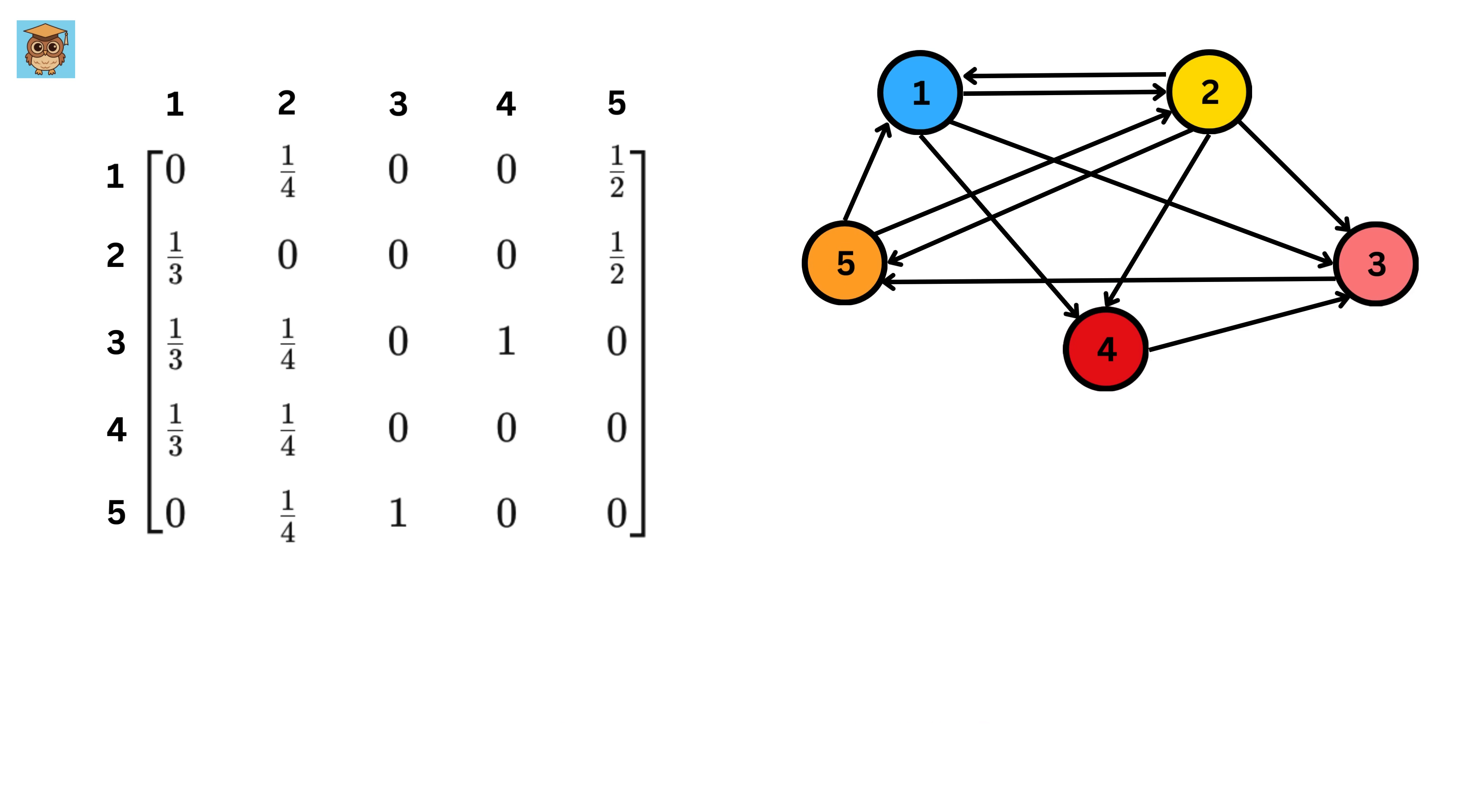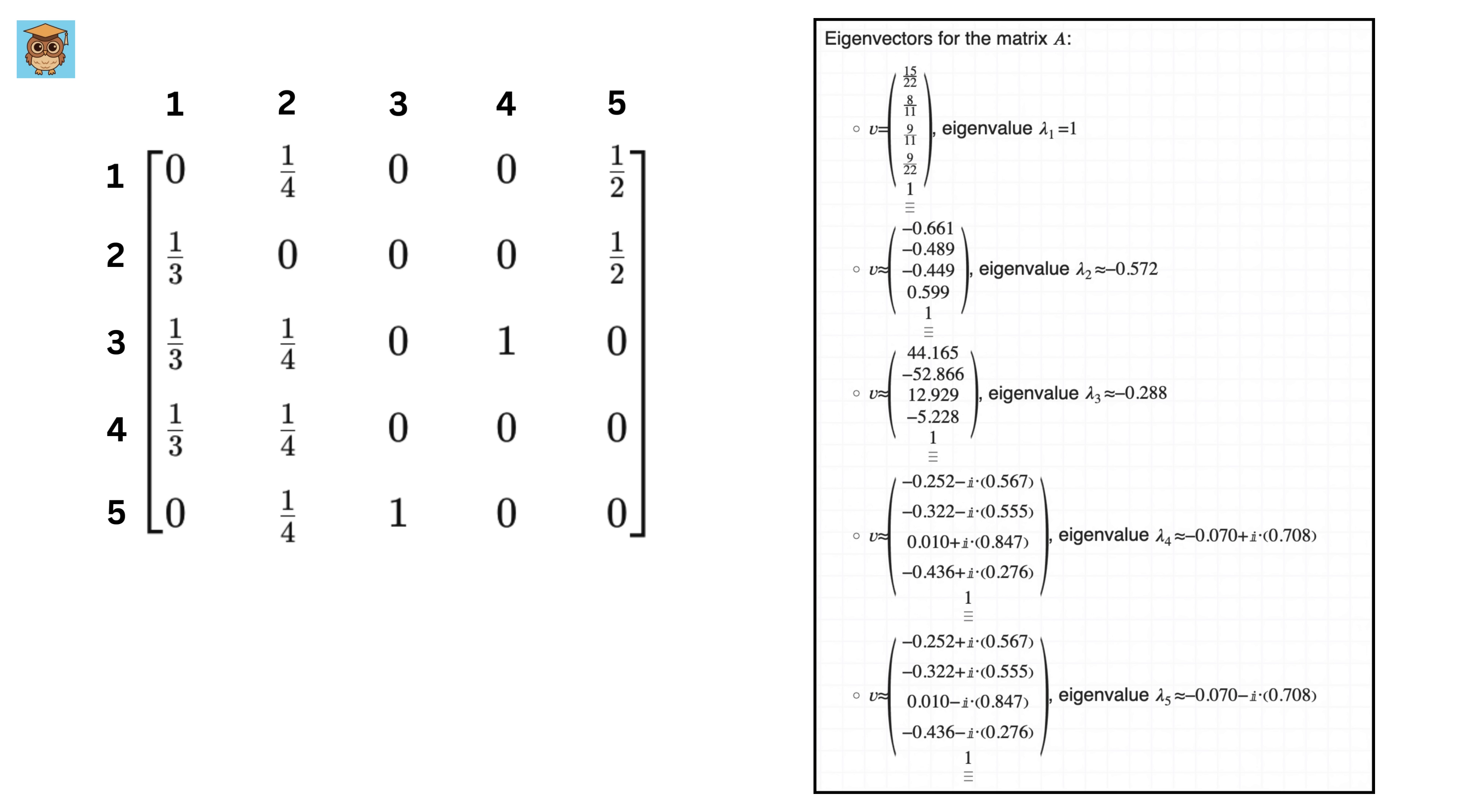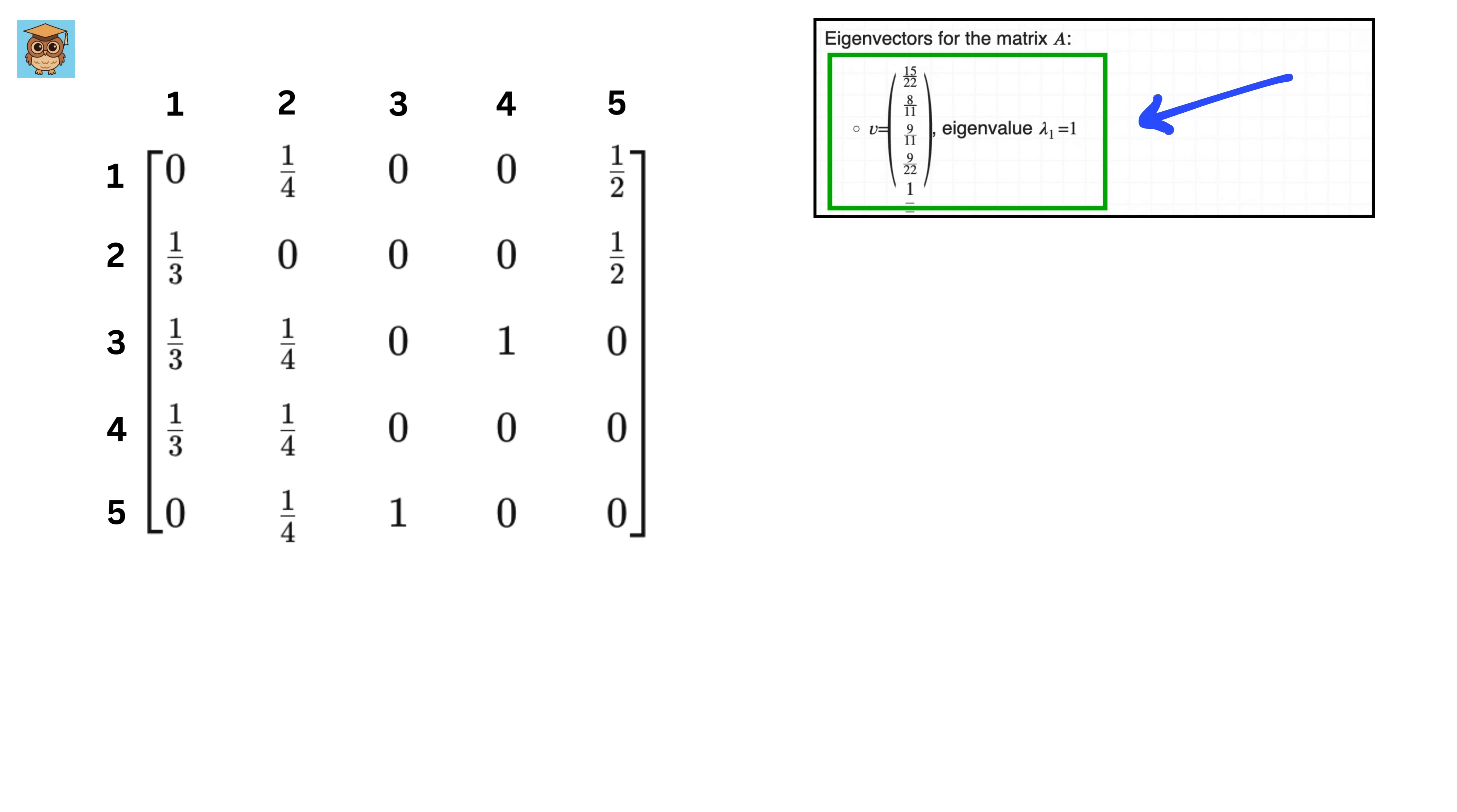Now we will compute the eigenvalues and eigenvectors of this matrix. We find this nice solution. The most important thing to note here is that the largest eigenvalue, which is this one, gives us the dominant eigenvector, which is this. This eigenvector tells us the relative importance of each website in the network.